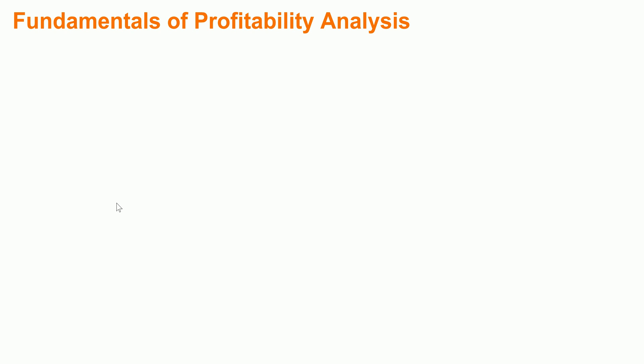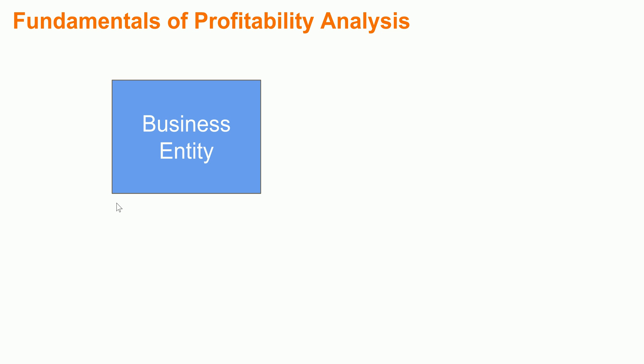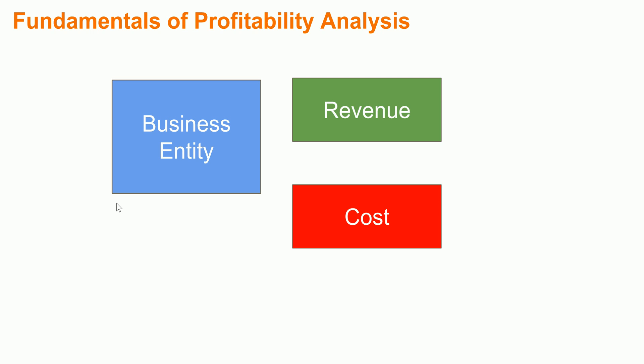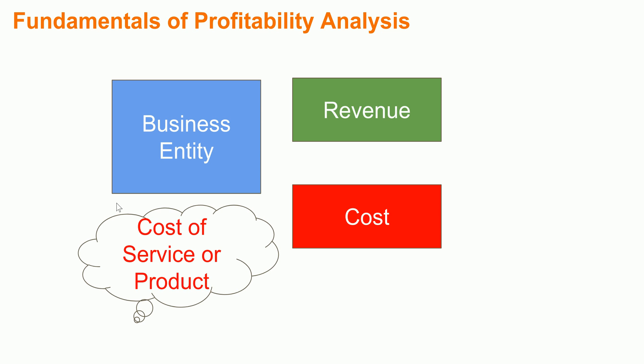Let us try to understand the fundamentals of profitability analysis. First and foremost, any business entity — whether it is a small or big organization — will have two elements: revenues and cost. The business activity they are performing will result in revenue, and in order to generate that revenue they need to incur some cost. These are the two fundamental elements of any business entity.